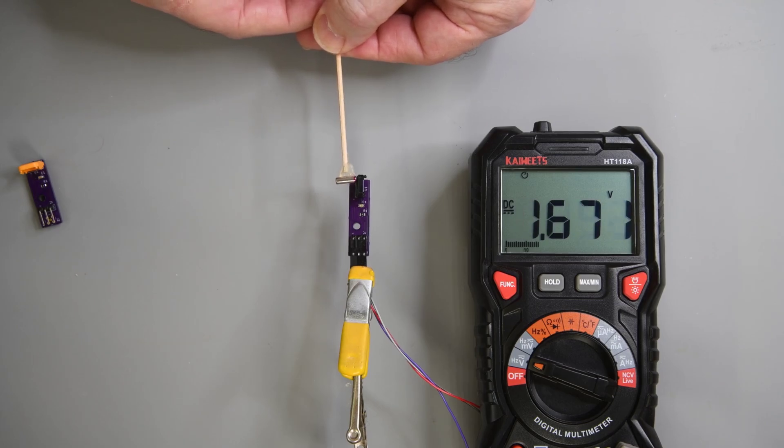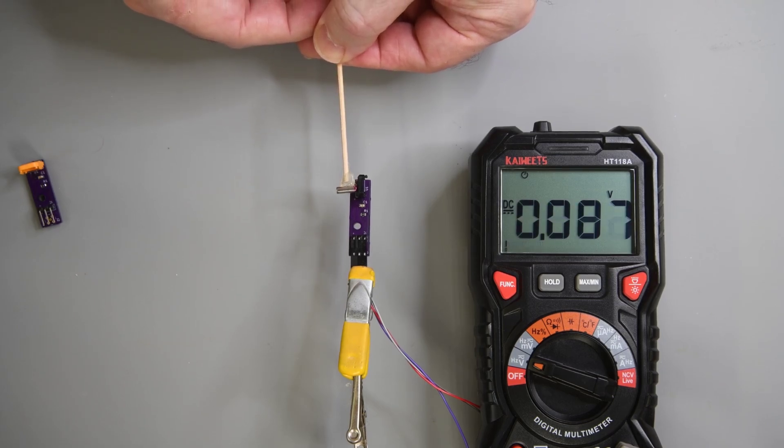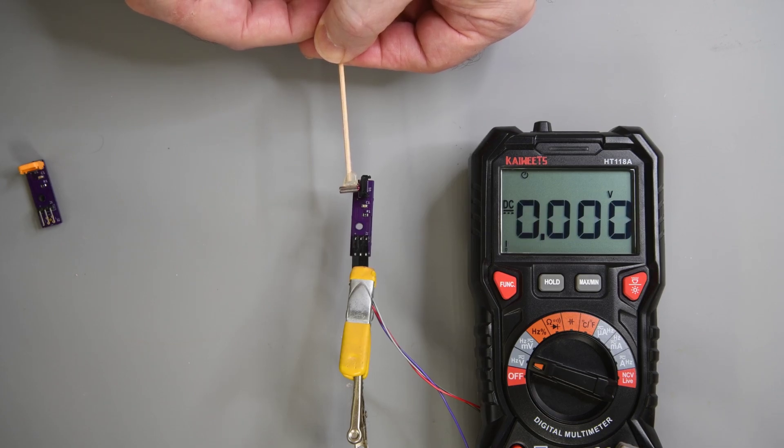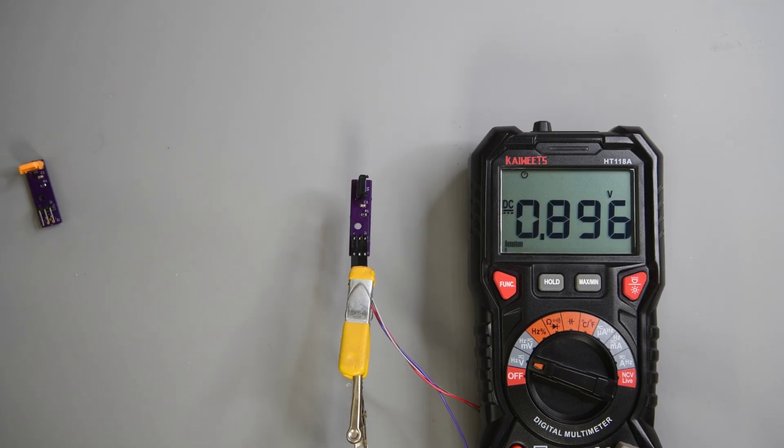Now if I rotate the magnet I get 1.8 volts with the magnet at the top. And 0 volts with the magnet at the bottom. So the direction of these sensors could be changed by rotating which pole of the magnet is facing the TMR sensor.